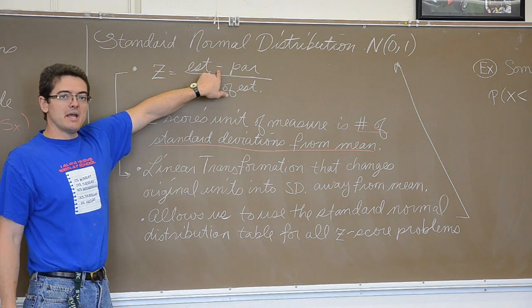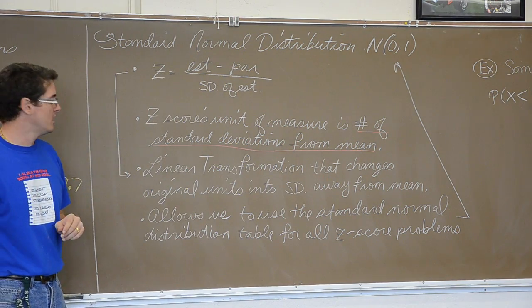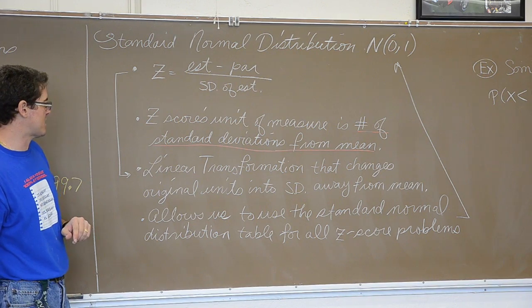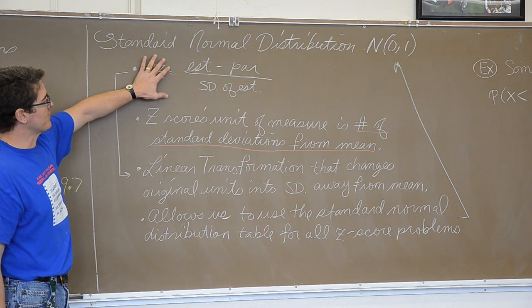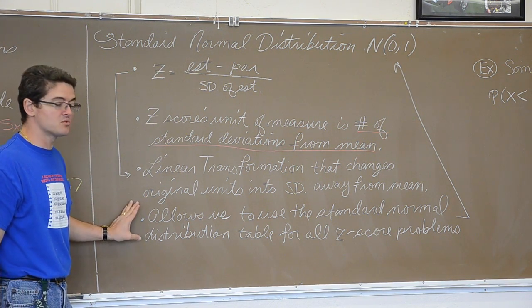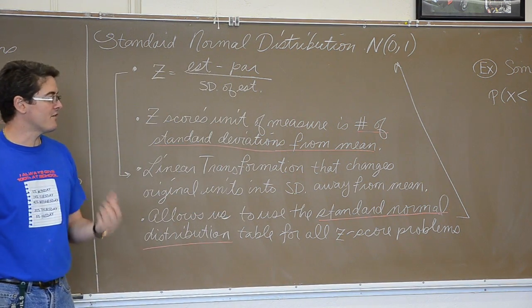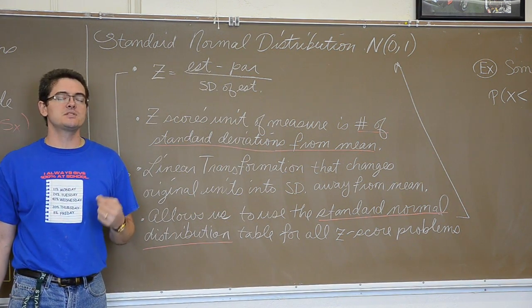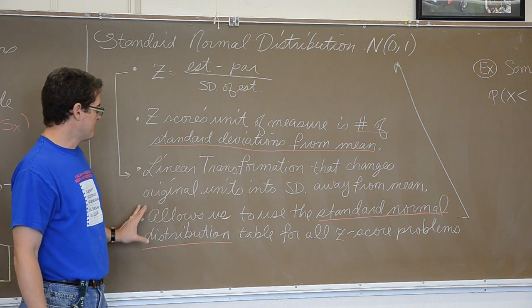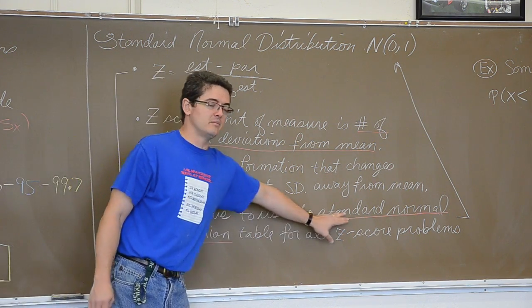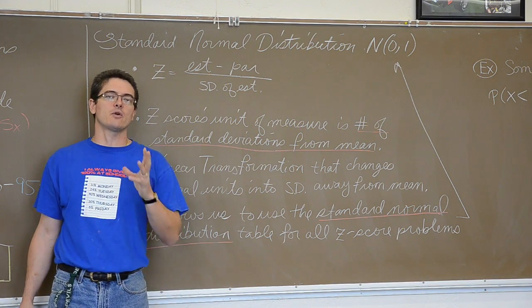This formula has subtraction in it and division in it, so this is a form of a linear transformation. Linear transformations change the original units of measure into standard deviations away from the mean. And this linear transformation, the z-score formula, does allow us to use one standard normal distribution, that is the z-score chart that is in the front of your book, for every single problem in the book until we get into t-score calculations. But that is many, many chapters from now.